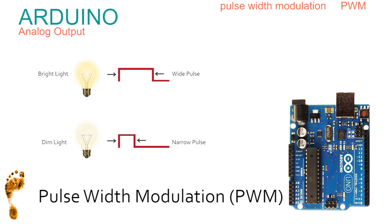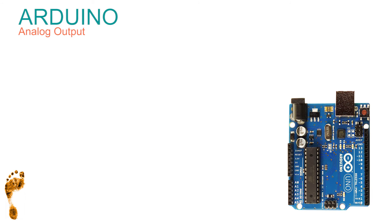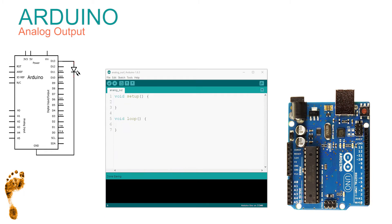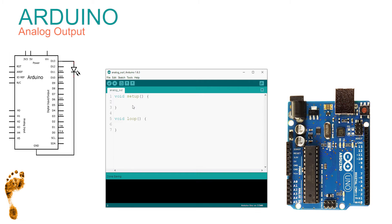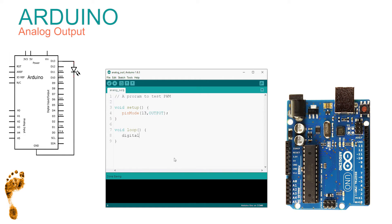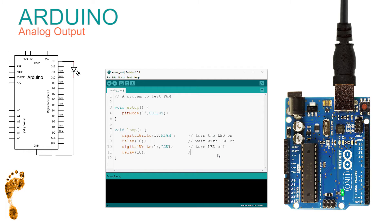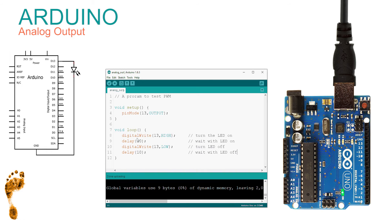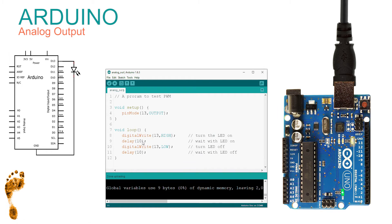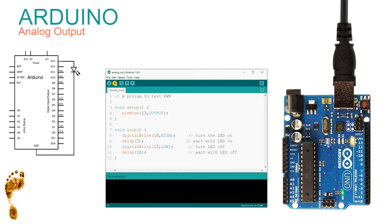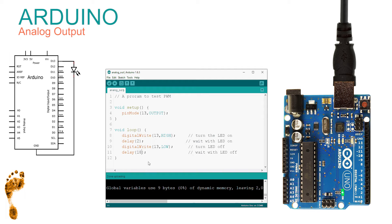The longer the width of the pulse the brighter the light; the narrower the pulse the dimmer the light. For this demonstration the schematic is the same as for digital output. In the software we set up pin 13 as an output, then digitally write HIGH for 10ms and LOW for 10ms. If we change so the light is on for 18ms and off for 2ms, compile and upload — it gets brighter. Change again: on for 2ms and off for 80ms — the light is hardly on.